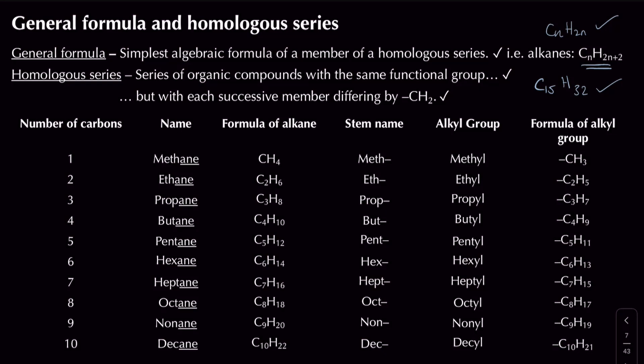A homologous series is defined as a series of organic compounds with the same functional group, where each successive member differs by CH2. For example, the alkenes homologous series: if you have 2 carbon atoms you get ethene. You can extend the carbon chain to get ethene, propene, butene, pentene, and so on — all sharing the same functional group (the C=C double bond) but differing by CH2 each time.